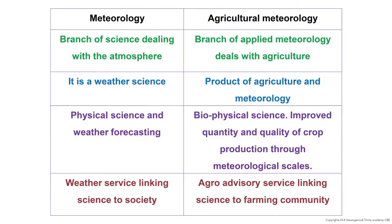Now let us discuss the difference between meteorology and agricultural meteorology. Meteorology is the branch of science dealing with the atmosphere — it is a weather science, a physical science, and involves weather forecasting and weather services linking science to society. Agricultural meteorology is a branch of applied meteorology that deals with agriculture — a product of meteorology and agriculture. It is a biophysical science that improves quantity and quality of crop production through meteorological services, with agro-advisory services linking science to the farming community.